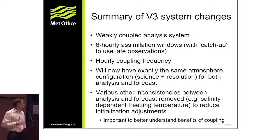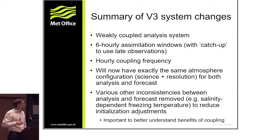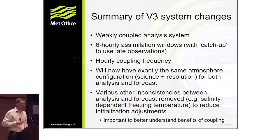We've been able to remove various other inconsistencies between analysis and forecast: the salinity-dependent freezing temperature I mentioned and its impact on sea ice, and issues with pressure correction. As a consequence, we're also using the same bulk formulae in both analysis and forecast, which I think will have a big impact in helping us understand the benefits of coupling — having removed these inconsistencies, we'll be able to focus on where the coupled system outperforms an ocean-only system and how it compares to other systems. Thank you very much.